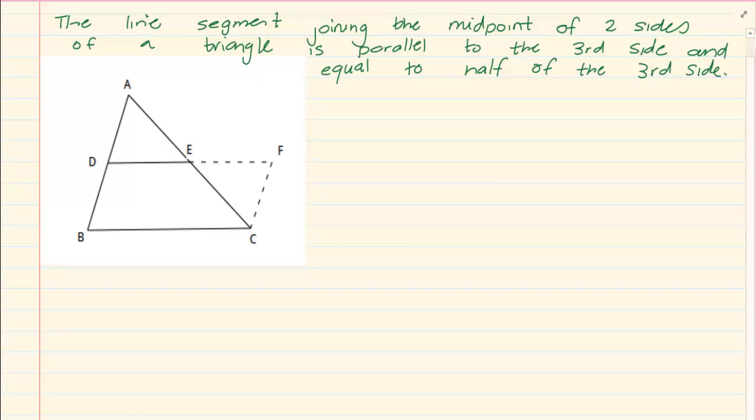Since they are telling us a line segment, they are talking of this line. It is joining the midpoint. So when they say midpoint, it means that AD is equal to DB and AE is equal to EC.